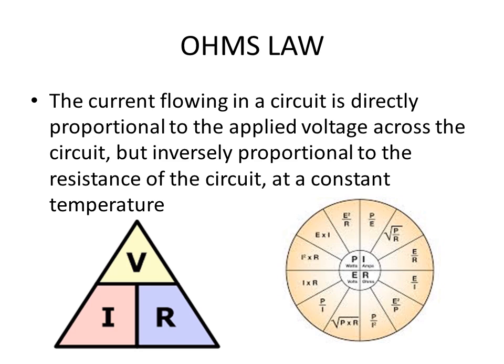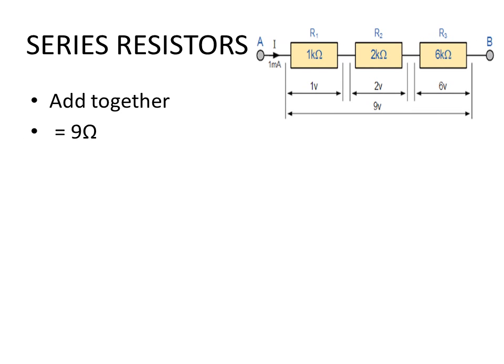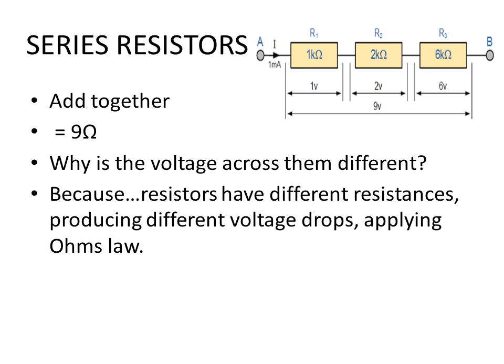The effect of resistors connected in series: In this configuration the values will add together. In the example to the right, these resistances will add up to 9 ohms. Consider the following question: Why is the voltage across them different? Because resistors have different resistances producing different voltage drops, applying Ohm's law which is V equals I times R. Pause a while here and calculate these voltage drops for yourself.